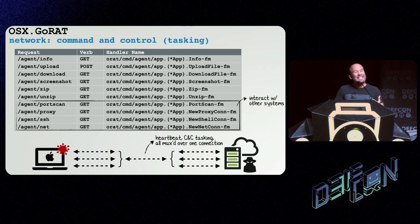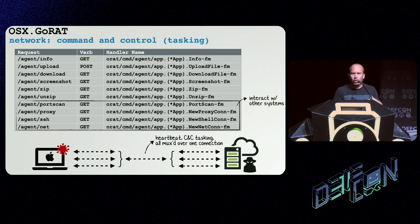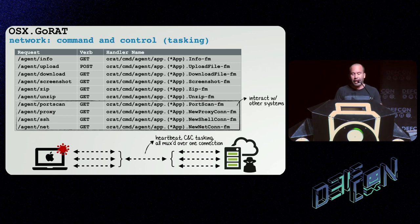Another recent Mac malware specimen that leverages the network is GoRat. GoRat is a pretty standard but fairly feature-complete backdoor for macOS. Its capabilities include things like uploading and downloading files, which is pretty standard. However, it also has some additional capabilities not commonly seen in Mac malware that allow it to interact with other systems via the network — for example, the ability to generate a port scan. If we're interested in detecting malware via network activity and the malware is generating port scans of remote systems, that's something we can pick up on. It also has the ability to set up tunnels and proxies — more network activity for us to detect.